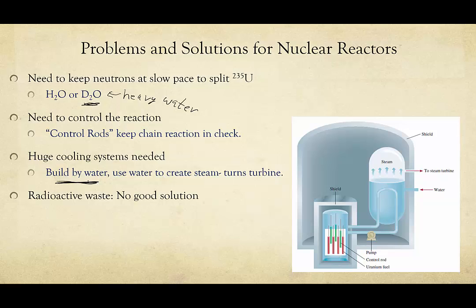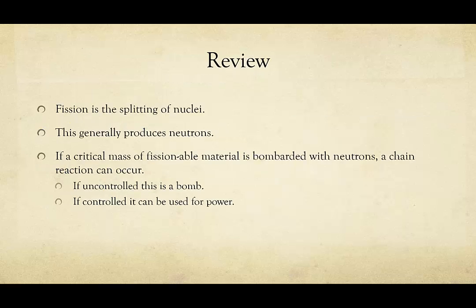In review: fission is the splitting of nuclei — we'll learn about the fusing of nuclei in the next video. This generally produces neutrons which allow a chain reaction to take place. If you have enough mass, this chain reaction will continue indefinitely. If allowed to go uncontrolled, we have a nuclear weapon. If it's allowed to continue in a very controlled manner — with heat tightly controlled — we can use that to create power.